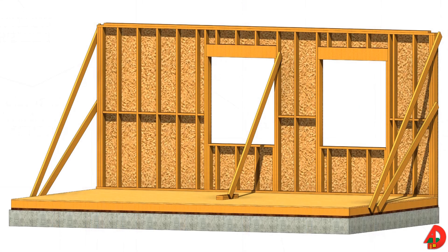Most walls can be raised manually if enough carpenters are available on the job. As a general rule for lifting wall operations, a carpenter is required for each 10 feet of wall. The order in which the walls are lifted may vary. Generally, longer exterior walls are raised first, then the short walls are raised and the corner posts are nailed together. Extreme care should be exercised when raising walls, especially in windy conditions, as wall panels can be easily caught and damaged by the wind.